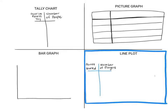We're going to start with the tally chart. The way that I can put data on a tally chart is I can take a survey. So I can ask, what is your favorite recess toy? I'm going to start writing down the recess toys that some people come up with — like jump rope, chalk, basketball, and wall ball. Those are the different recess toys I'm going to interview people about. Every time somebody says jump rope is their favorite, I'm going to put a tally.